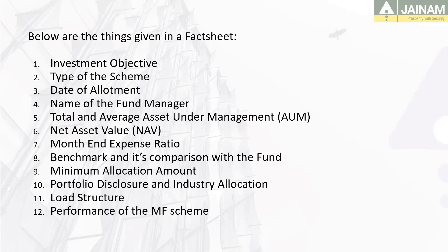Below are the things given in a fact sheet. Investment Objectives — It contains investment objectives, whether it is for long term or short term. Types of schemes — There are multiple schemes available for investors such as equity funds, debt funds, hybrid funds, etc. Date of Allotment — This contains information about the allocation date of stock of a mutual fund scheme, इससे हमें stock कितना पुराना है यह पता चल सकता है.